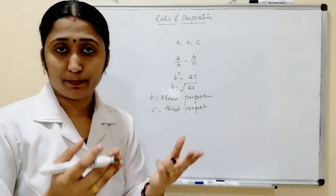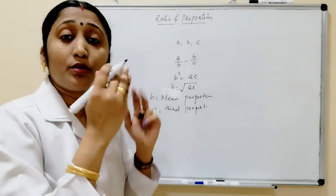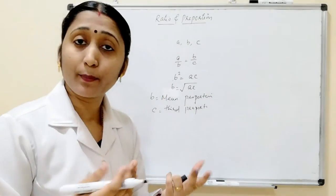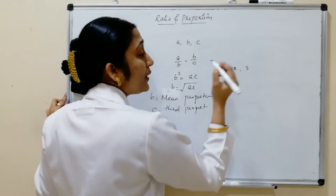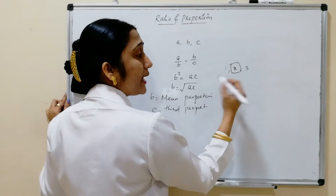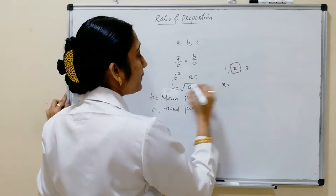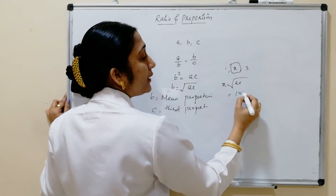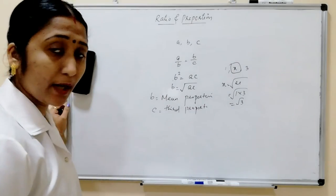For example, if 1, X, 3 are in ratio and you have to find the mean proportion: X = √(A×C) = √(1×3) = √3. So √3 is the mean proportion.